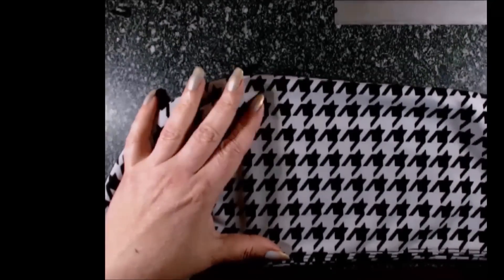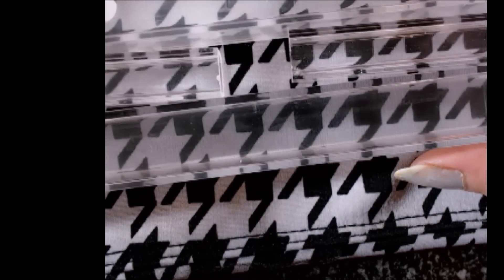Let us first take a look at the actual houndstooth pattern and try and isolate a part of it. If we isolate a square that keeps repeating, it's actually made out of four quarters of which one is white, one is black, and the other two are diagonally striped squares.